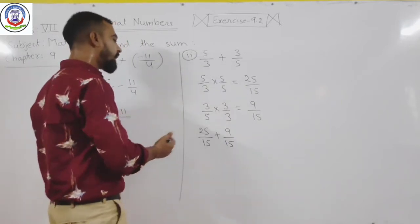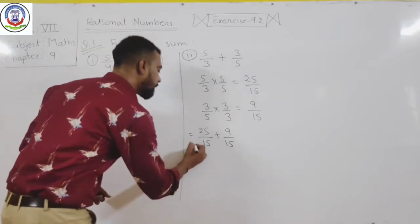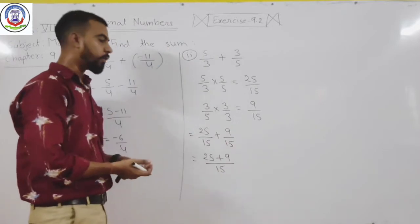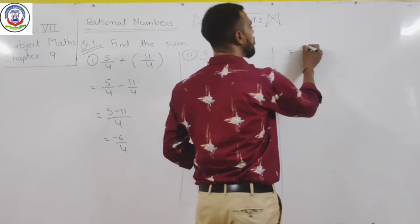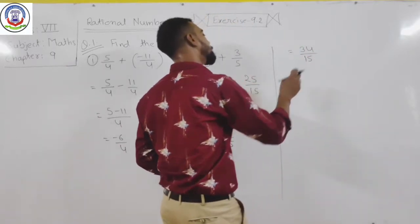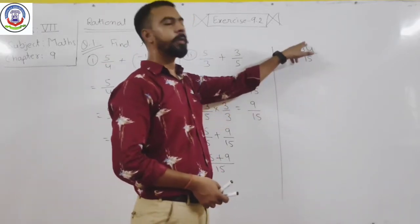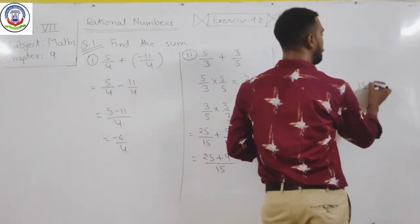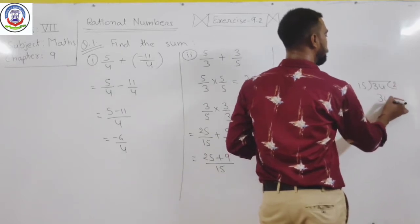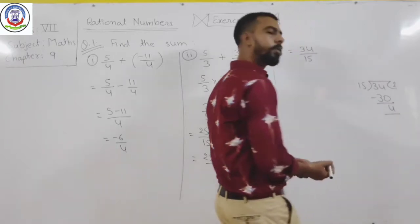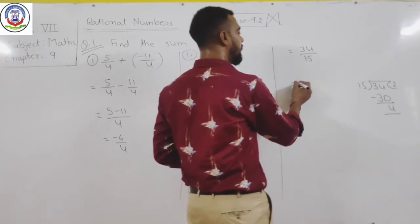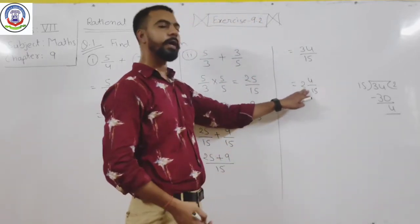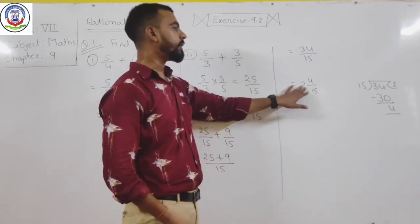The denominator is now equal. After that you can add or subtract as required. So we will write 25 plus 9 upon 15, and 25 plus 9 will be 34. Our answer is 34 upon 15. But here the denominator is smaller than the numerator. So you will divide: 15 goes into 34 twice with remainder 4. You will convert this into a mixed number, and our answer will be 2 and 4 upon 15.